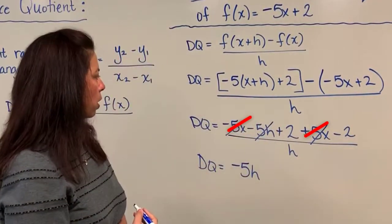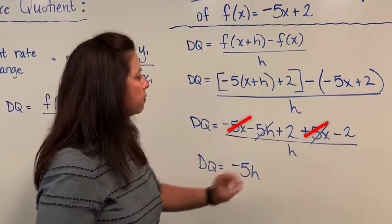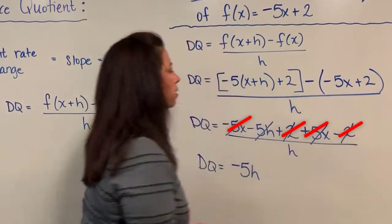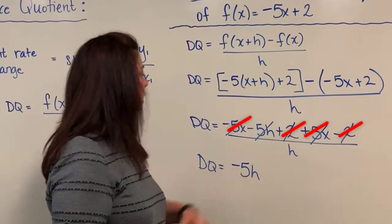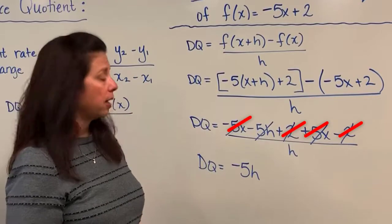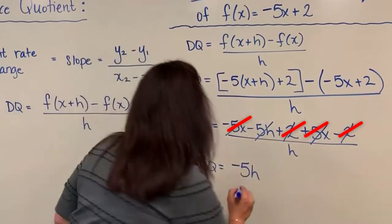We've dealt with it so I will cross it out, and then I have a positive 2 subtract 2. Those two terms subtract out themselves. So literally in the numerator I'm only left with negative 5h, but then of course divide by h.